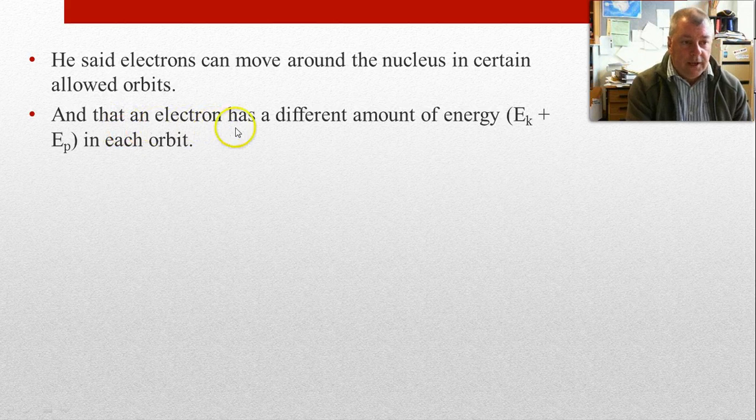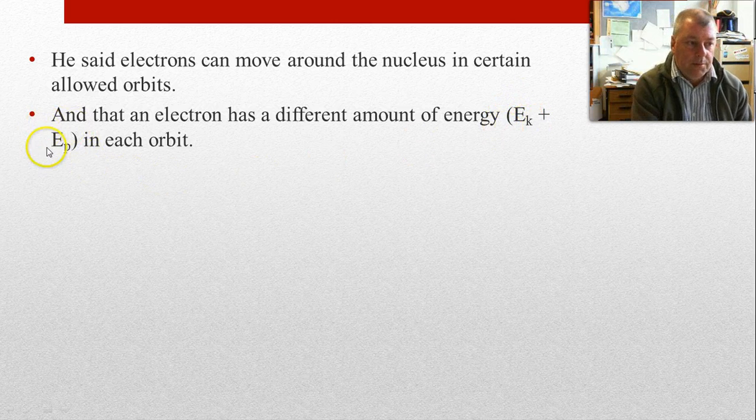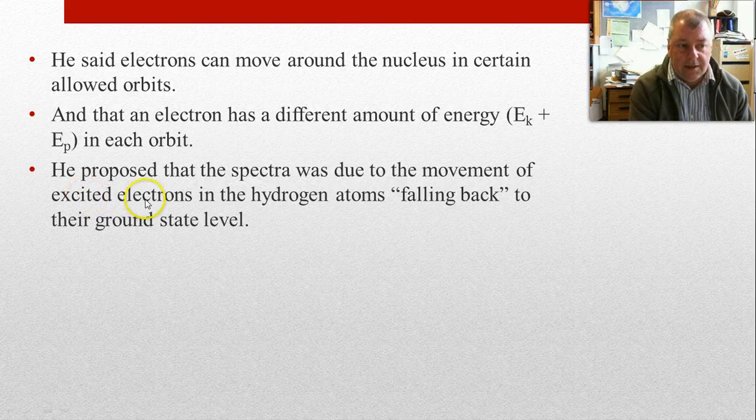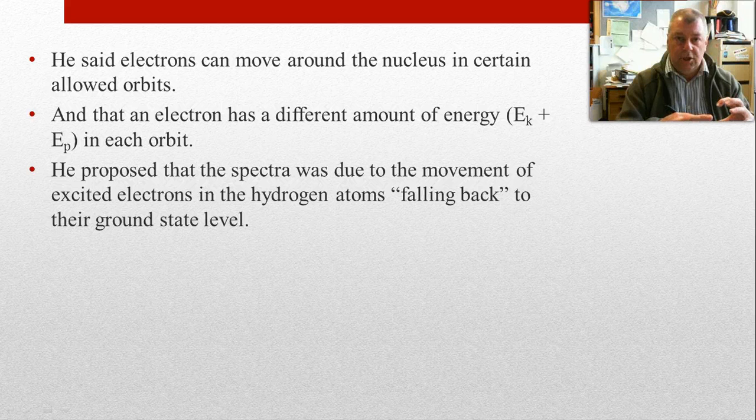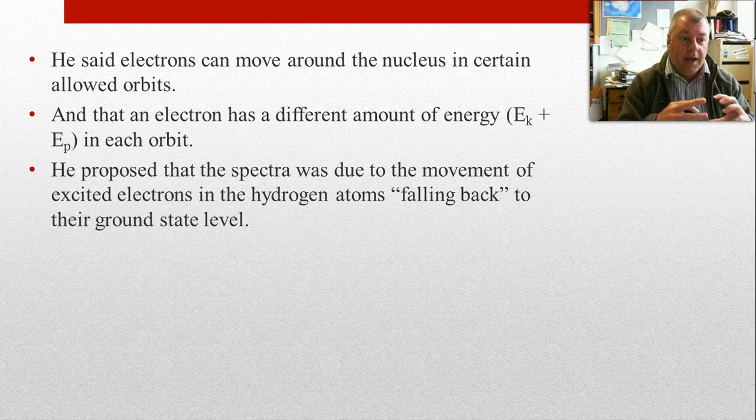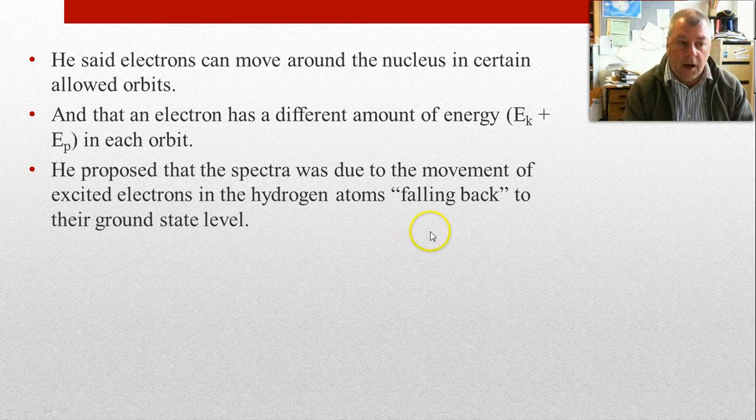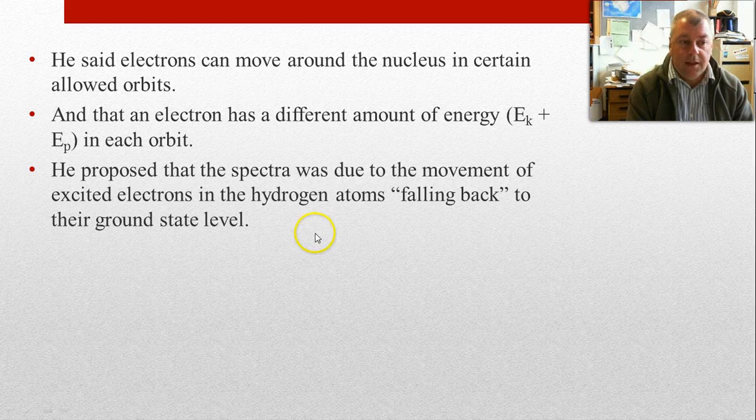An electron has a different amount of energy in each orbit. The energy it has is in the form of kinetic energy, movement, but also potential energy from its position. He proposed that the spectra was due to the movement of excited electrons in the hydrogen atoms falling back to what's called the ground state. The ground state is where the electrons are in the lowest possible energy level. An excited electron is an electron that gains energy through a variety of processes, has too much energy to be in that ground state, and has to jump up to higher energy levels. Then, when they fall back to lower energy levels, they emit the excess energy. That's what we're seeing as the spectrum.